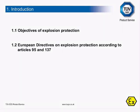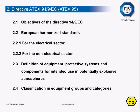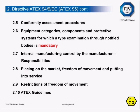Looking at the first slides: the introduction of the Objectives of Explosion Protection, the European Directives on Explosion Protection according to Article 95 and 137. The next section covers the Objectives of Directive 94/9/EC, European Harmonized Standards for the Electrical Sector, the Non-Electrical Sector, Definitions of Equipment, Protective Systems and Components for Intended Use in Potentially Explosive Atmospheres, Classification in Equipment Groups and Categories, Conformity Assessment Procedures, Equipment Categories, Components and Protective Systems where type examination through notified bodies is mandatory, Internal Manufacturing controlled by the manufacturer's responsibilities, Placing on the Market, Freedom of Movement and Putting into Service, Restrictions of Freedom of Movement, and ATEX Guidelines.